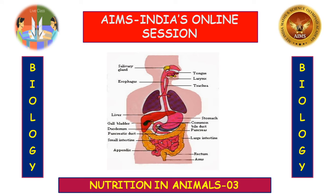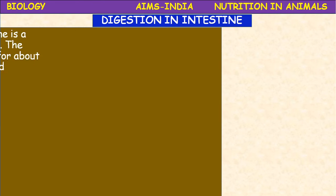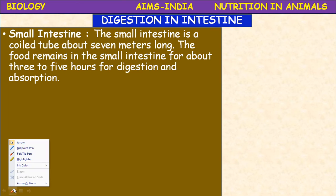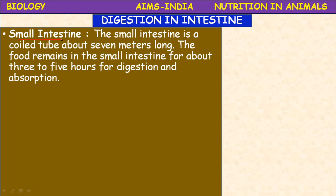Let us see further how digestion proceeds — digestion in the intestine, meaning the small intestine. From the stomach, food slowly enters the small intestine. At the junction of the small intestine and stomach there is a valve called the pyloric sphincter, which allows only small quantities of food through. The pulp-like formation of food in the stomach, mixed with hydrochloric acid, is called chyme. Chyme is slightly acidic in nature.